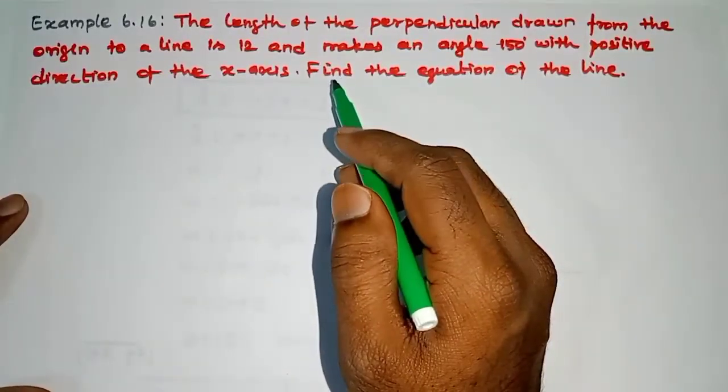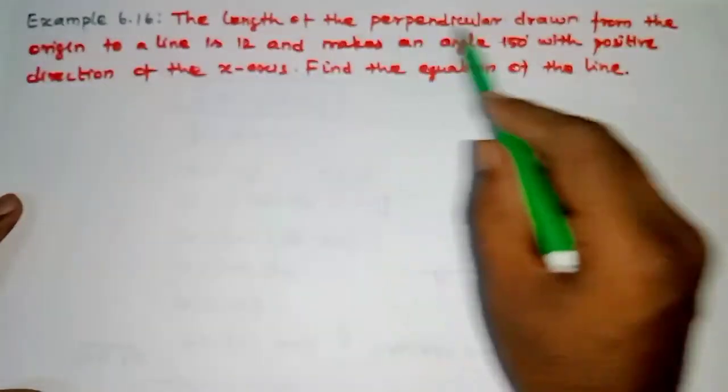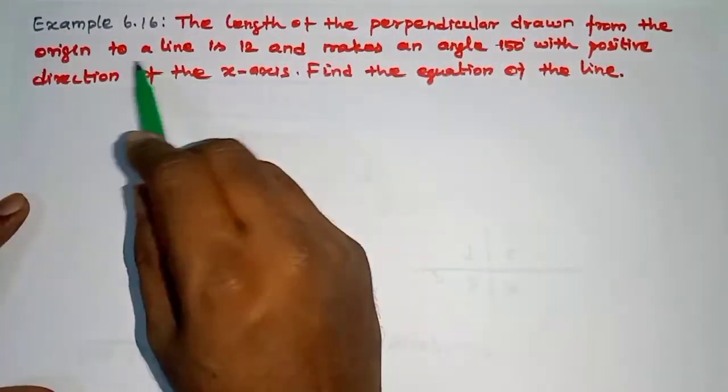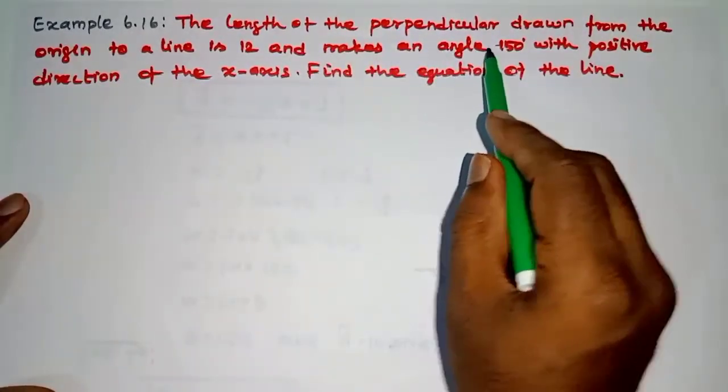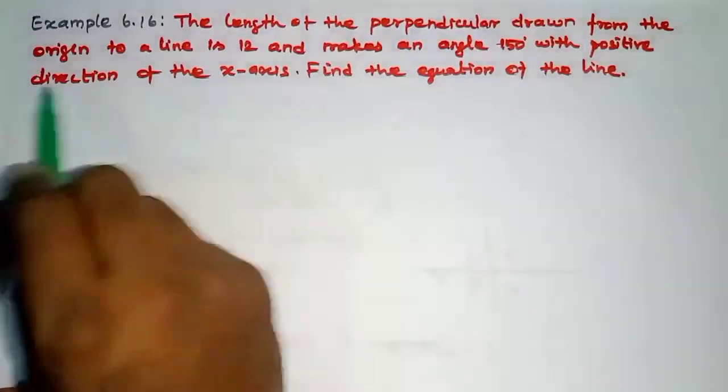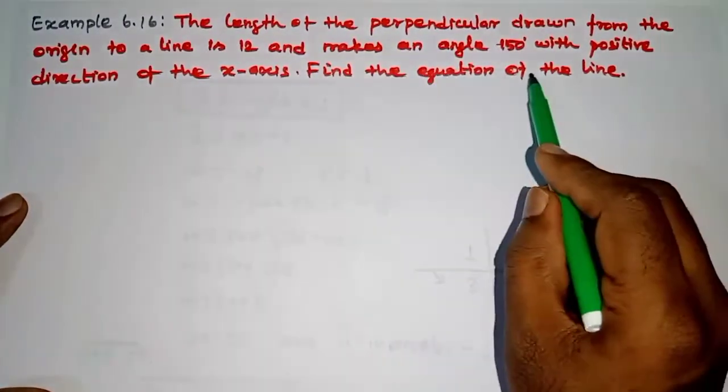Hi students, this is Silambam Institution, 11th standard, Example 6.16. The length of the perpendicular drawn from the origin to a line is 12 units and makes an angle 150 degrees with positive direction of the x-axis. Find the equation of the line.